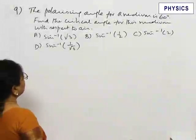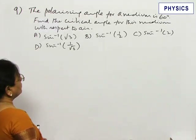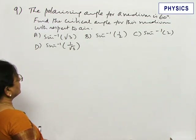Problem 9. The polarizing angle for a medium is 60 degrees. Find the critical angle for this medium with respect to air.